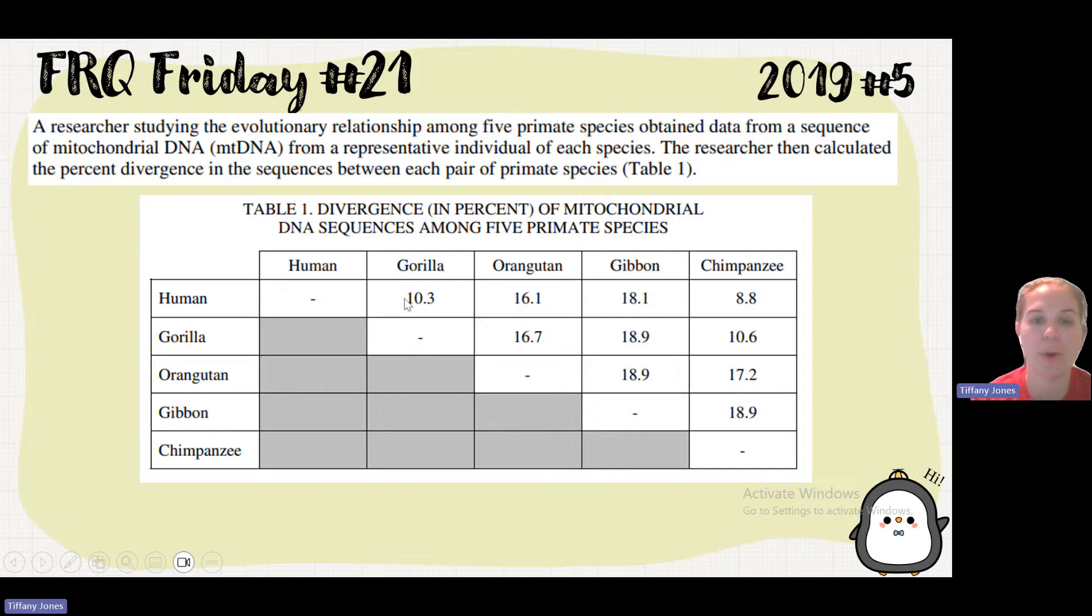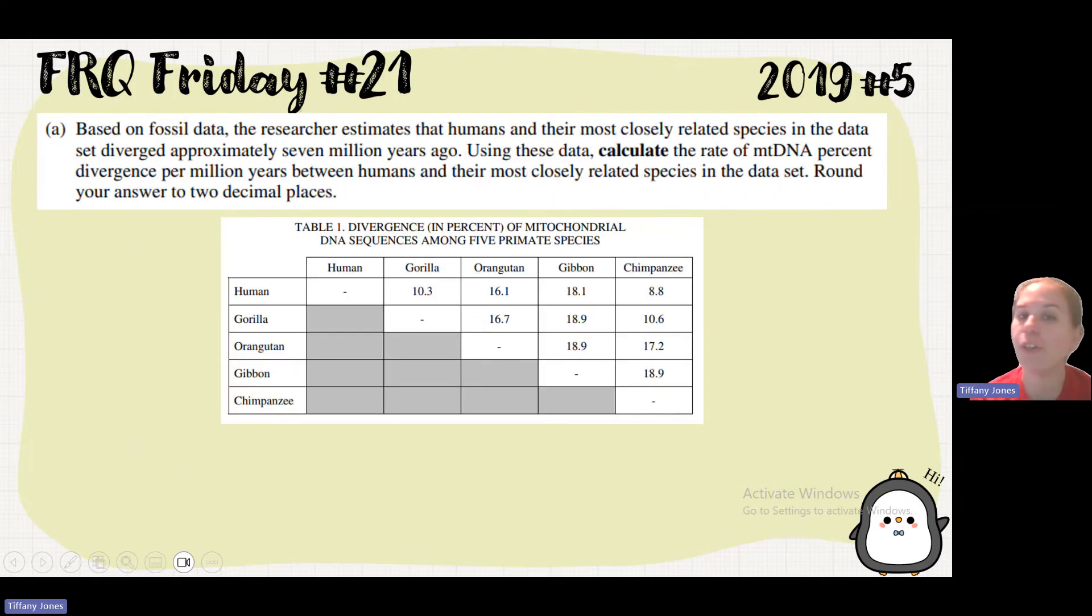You can see that there is 10.3% divergence between the human and the gorilla and so on. So based on the fossil data, the researcher estimates that humans and their most closely related species in the data set diverged approximately 7 million years ago. Using this data, calculate the rate of mtDNA percent divergence per million years between humans and their most closely related species in the data set, and then we're going to round our answer to two decimal places.